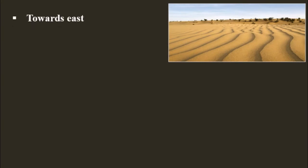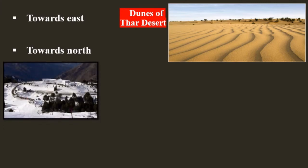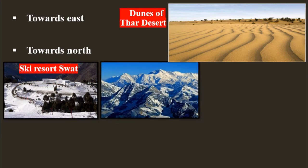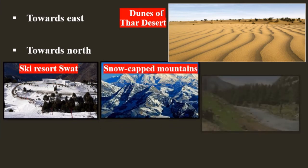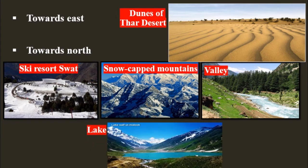Towards the east are hot dusty plains and the dunes of the Thar Desert. As you move towards the north, you will come to farmland and orchards lush with crops. Still further north, you will see green colorful valleys with towering snow-capped mountains in the background, and there are beautiful lakes and fast-flowing rivers.